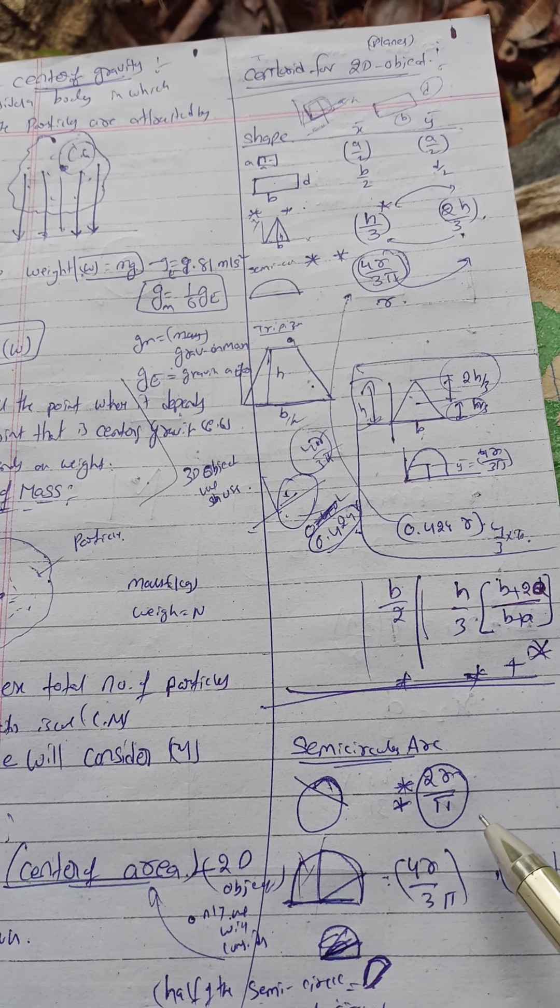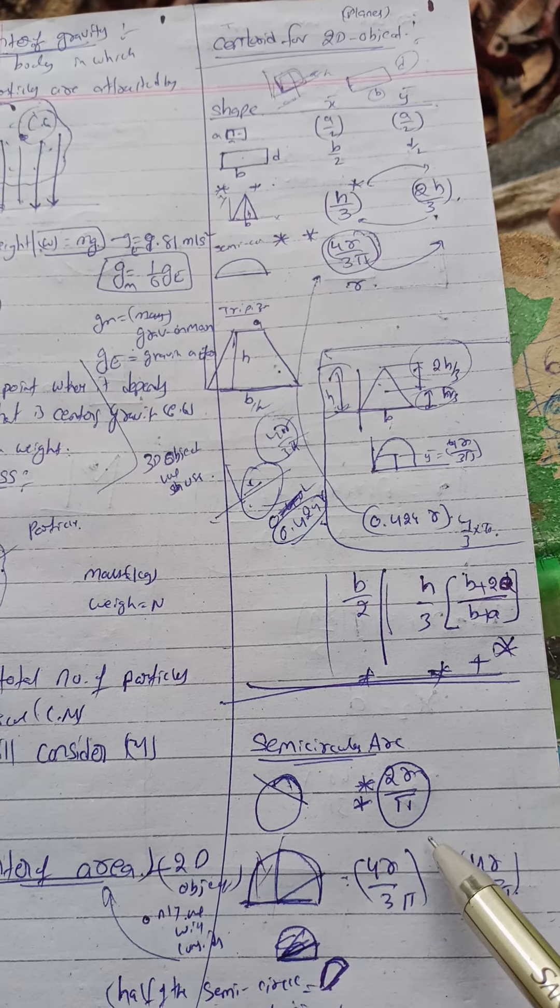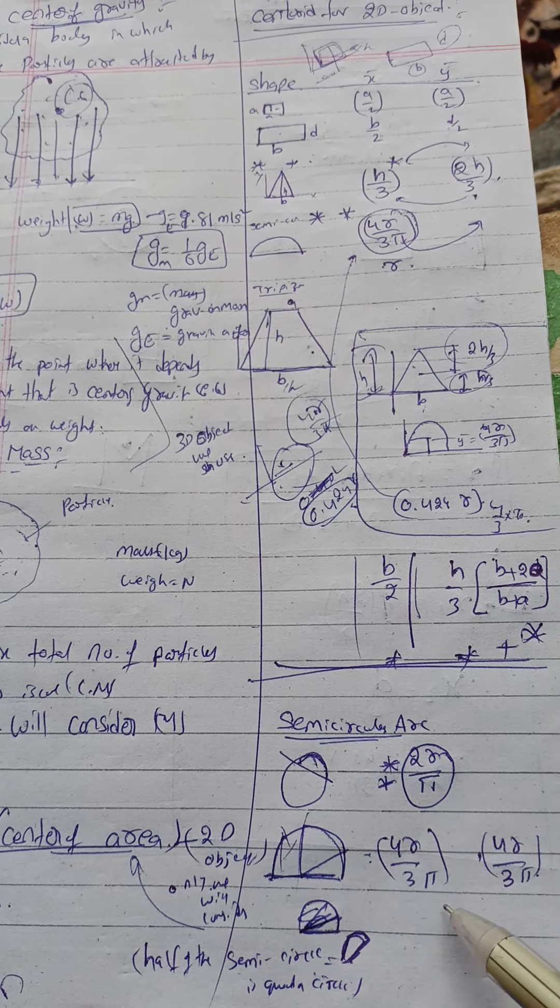For the quadrant, sorry, for semicircle it is 2r/π, and for quadrant it is 4r/3π.